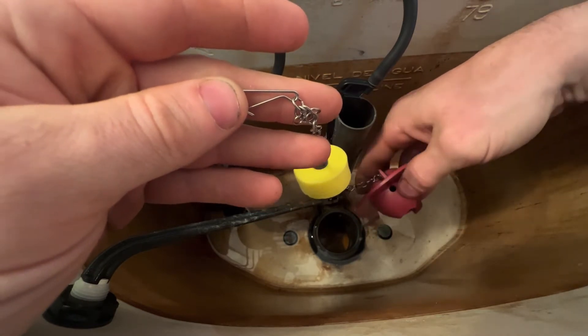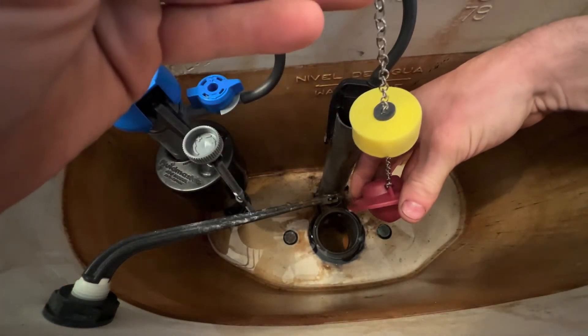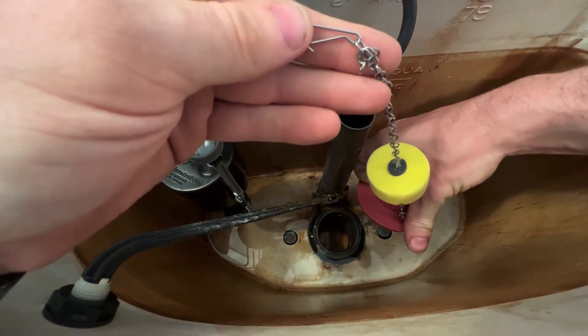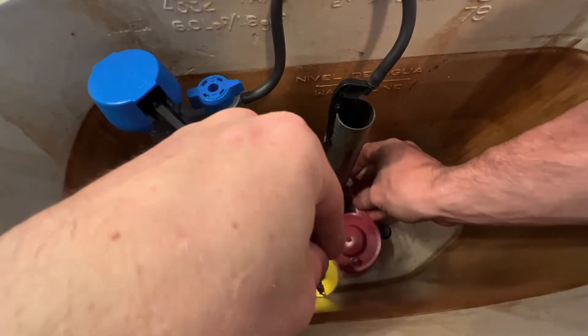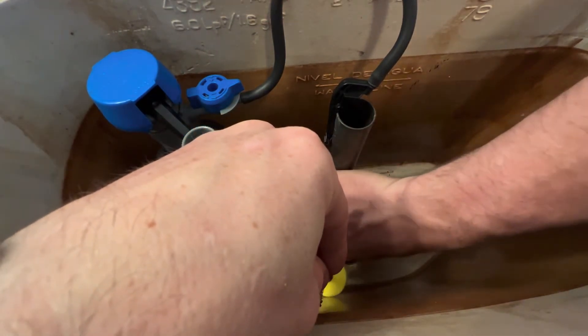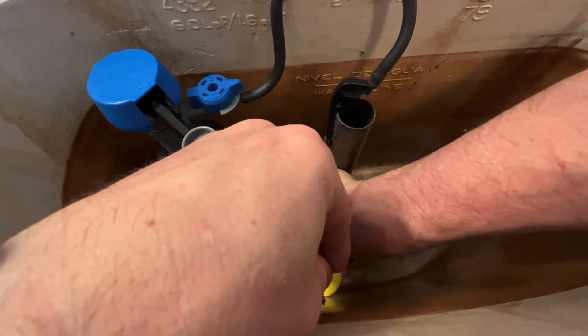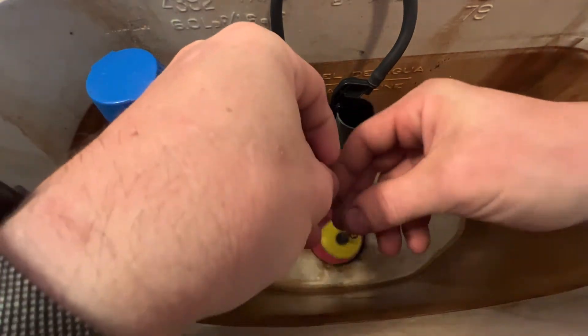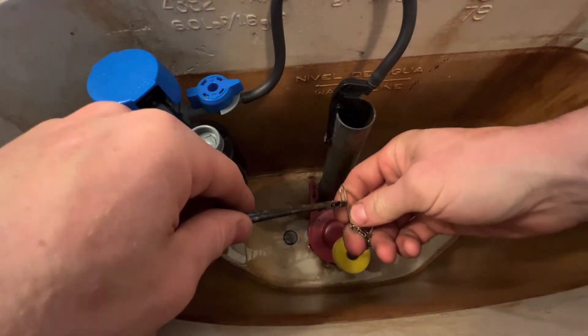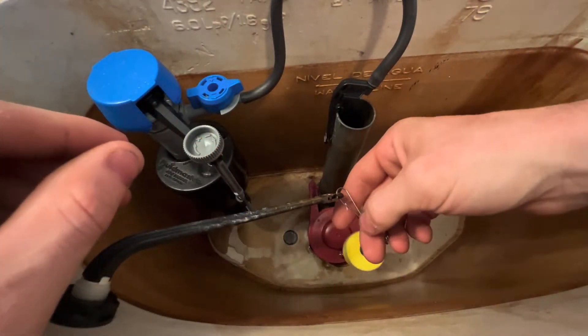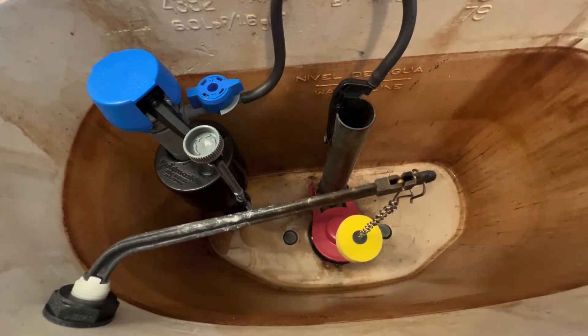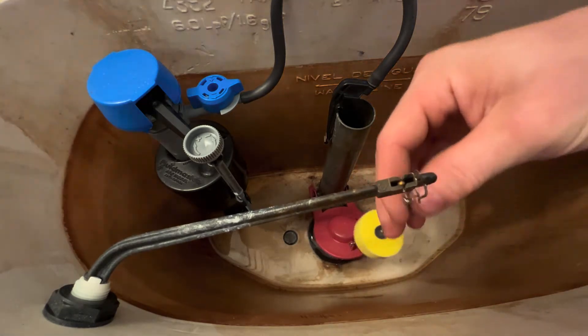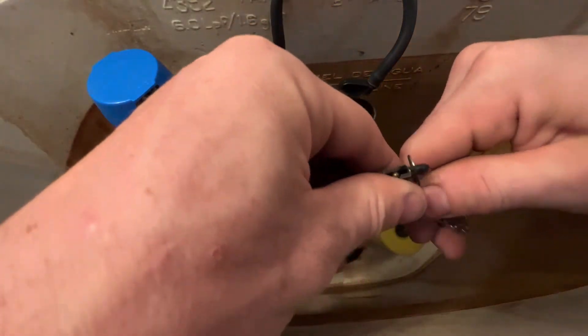That air will come out once the flapper is up, and then the float will hold it up until the water level drops and then it will close. So you can adjust your length of flush. Let me adjust this.